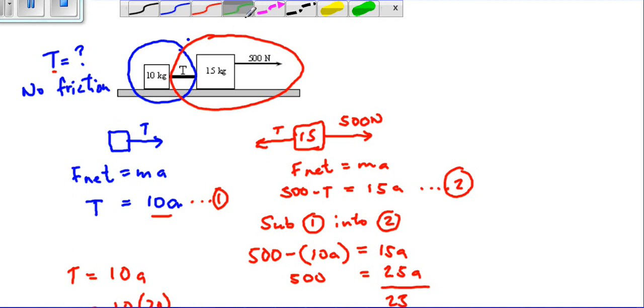To check the sum, we can say F equals ma. If there is no friction, just remember there must be no friction because it can be confusing when there is friction, although you can do it with friction. Our masses are 15 plus 10 equals 25, and our force is 500. So 500 divided by 25, A equals 20 meters per second squared. This is a way to check that our acceleration is correct.